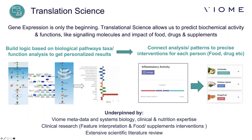Gene expression is just the beginning. It's the translational science that allows us to predict the biochemical activity and functions. We can tell what molecules are being produced as signaling molecules by the microbiome, and the impact of food, drugs, and supplements on the microbiome — how that changes pathways leading to either disease or lowering risk of disease. Inflammation is a root cause of many diseases, so we look at the gene pathways causing increased inflammation, then use translational science and AI to determine what foods and supplements might dampen that inflammatory activity.